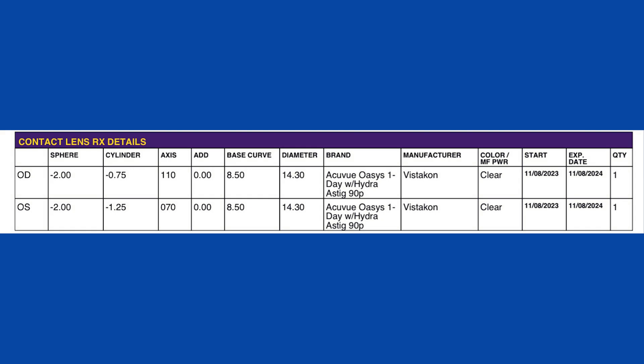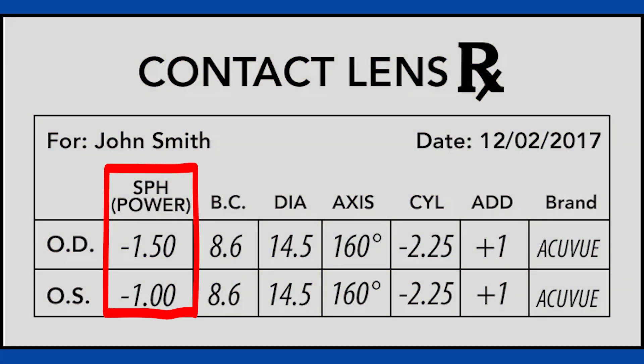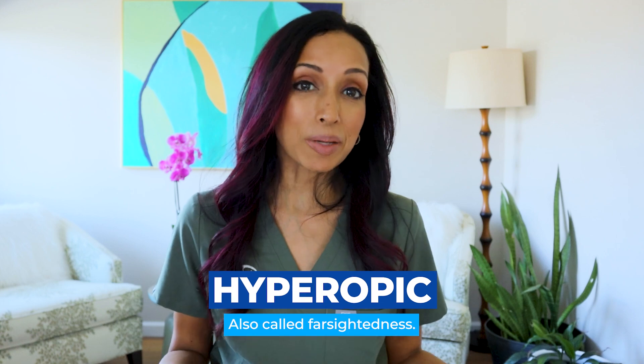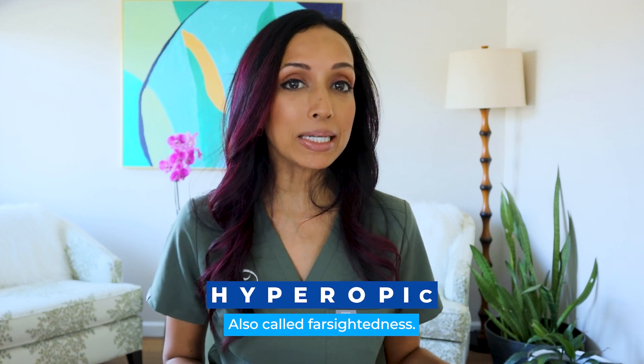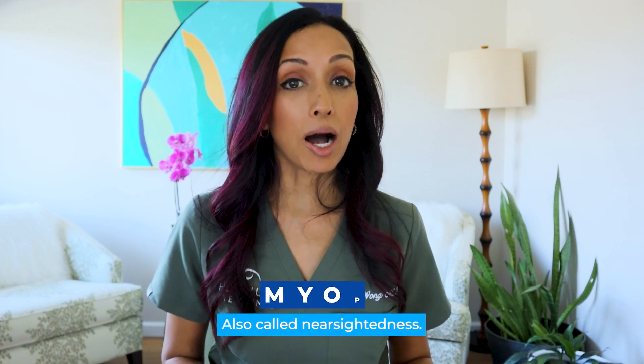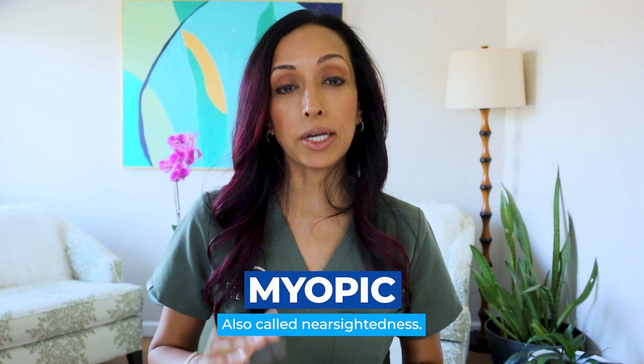Then you're going to see some columns: sphere, cylinder, axis, and add power. Not all of these may apply to you, but some might, just like with your glasses prescription. The sphere number can be plus or minus. If it's a plus number, it means you're hyperopic, or sometimes called farsighted. If it's a minus number, it means you're myopic, or nearsighted.